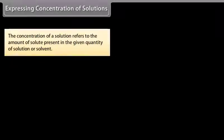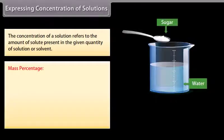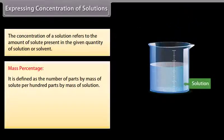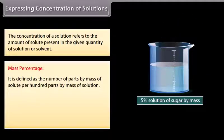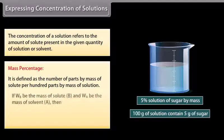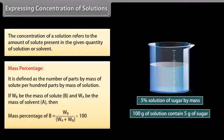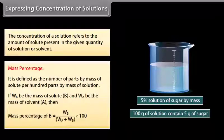The concentration of a solution refers to the amount of solute present in the given quantity of solution or solvent. Mass percentage is defined as the number of parts by mass of solute per hundred parts by mass of solution. If WB is the mass of solute B and WA is the mass of solvent A, then mass percentage of B = WB / (WA + WB) × 100.